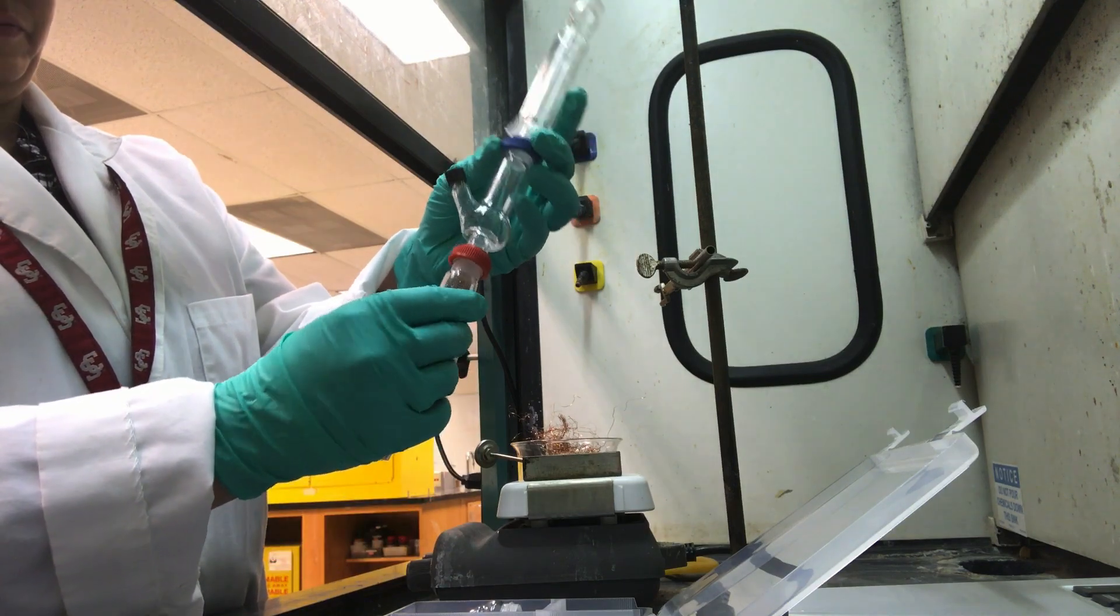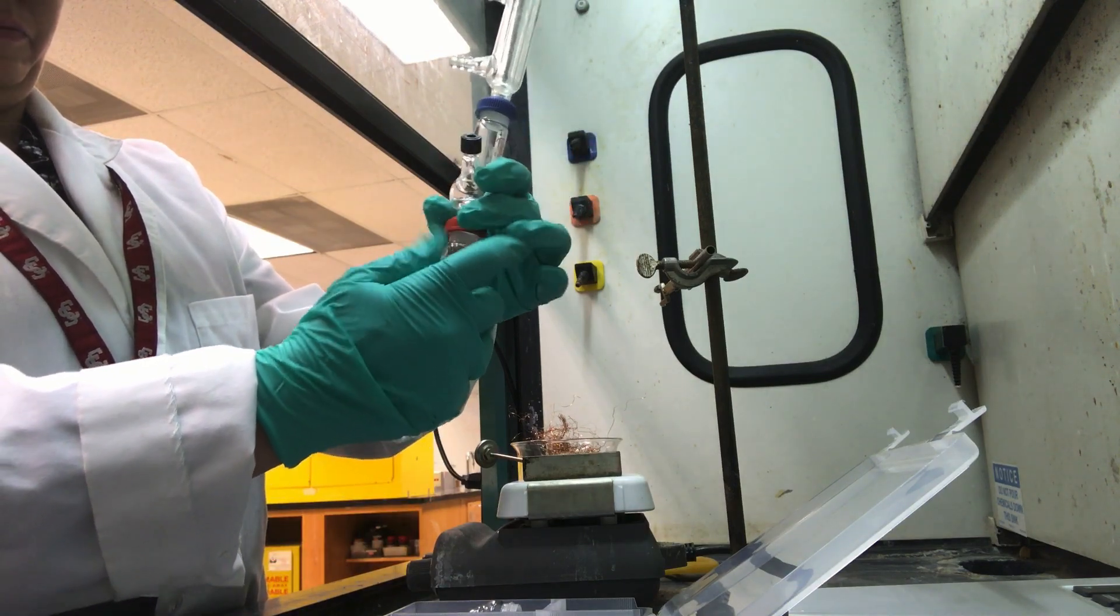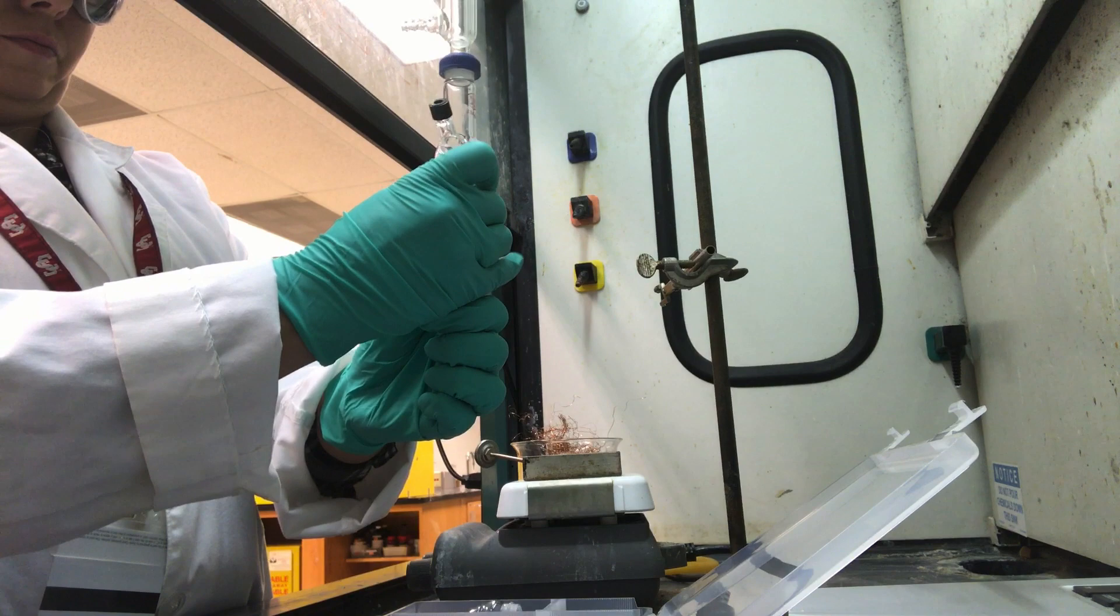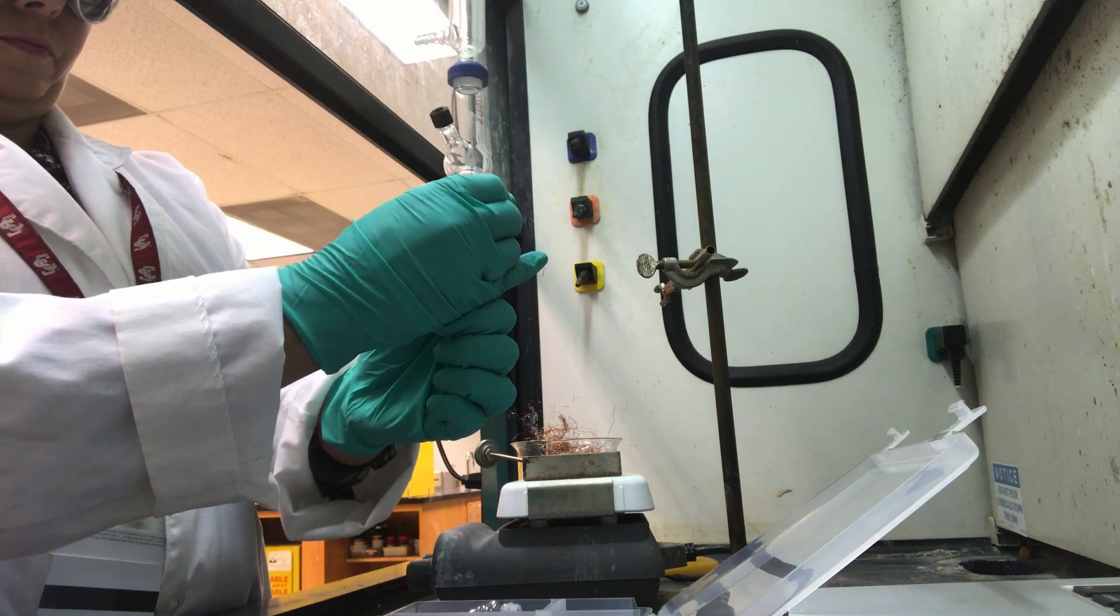Attach the copper-filled air condenser to the Hickman still. The round-bottom flask, which will contain your sample, is attached at the bottom.